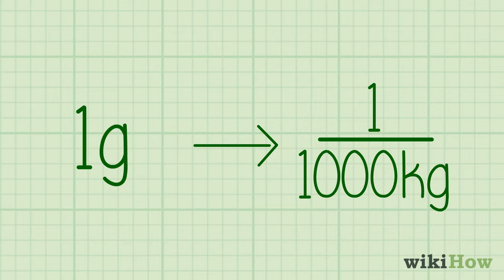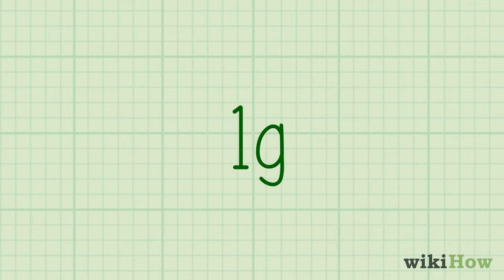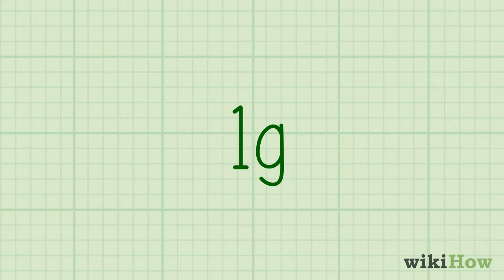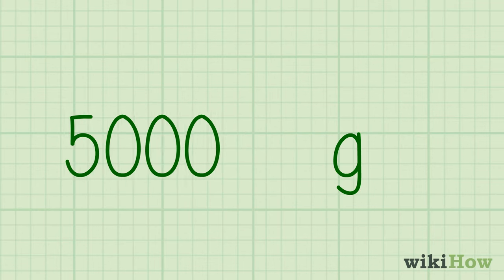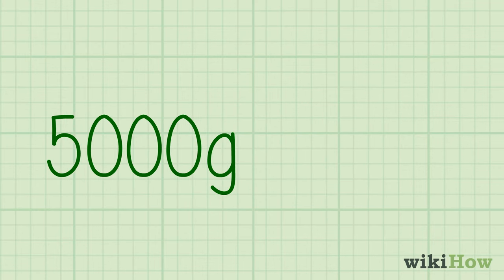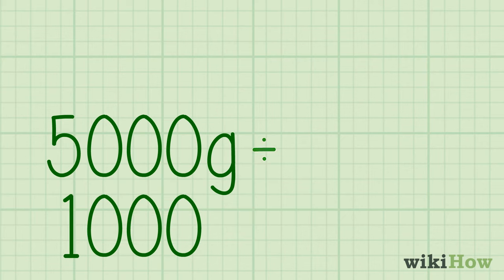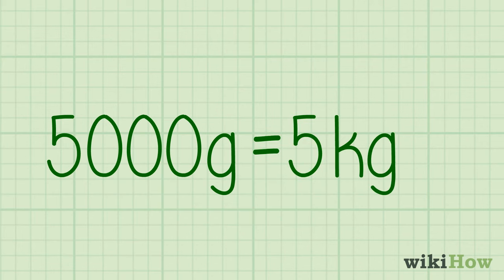When you're doing the conversion, write the number of grams first. For instance, let's say you're converting 5,000 grams into kilograms. Write 5,000 followed by g or grams to indicate the unit of measurement. Next, divide 5,000 by 1,000 to get the number 5. Write kg or kilograms after your answer. And that's it.